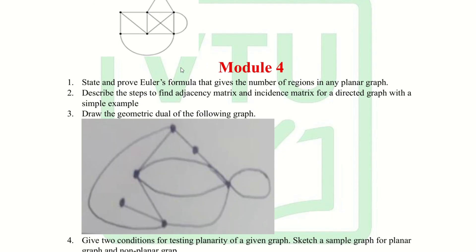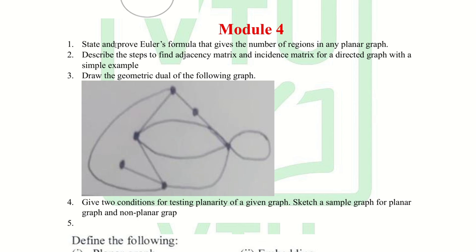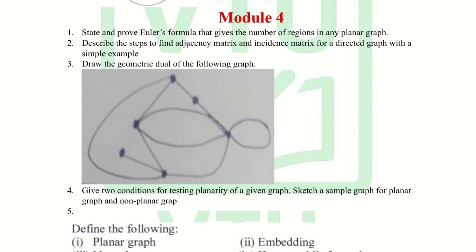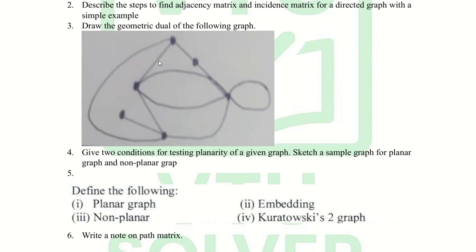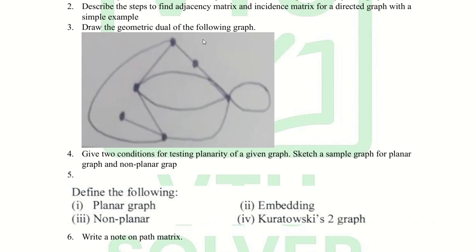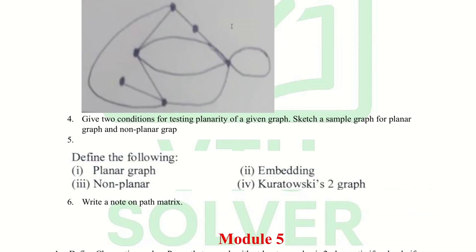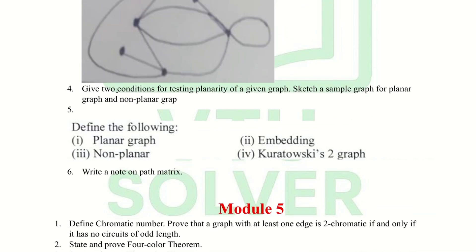Module 4 — first question: state and prove Euler's formula for the number of regions in a planar graph. The second question: describe the steps to find the adjacency matrix and incidence matrix for a directed graph with a simple example. The third question: draw the geometric dual of the given graph. The fourth question: give two conditions for testing planarity of a given graph; sketch a simple planar and non-planar graph.